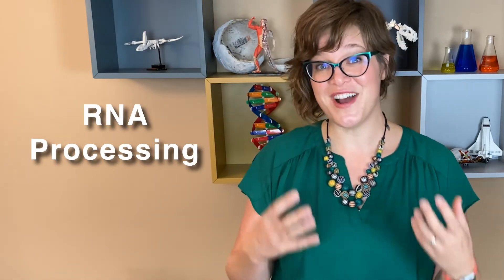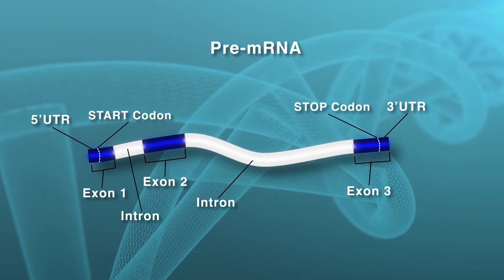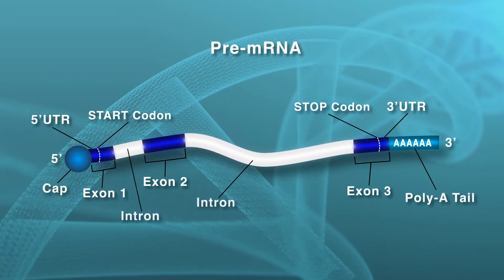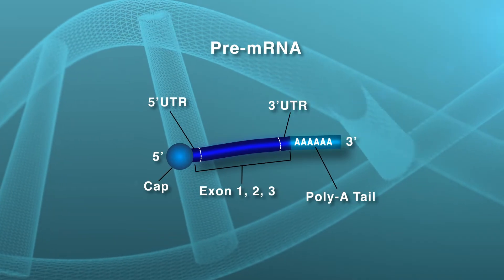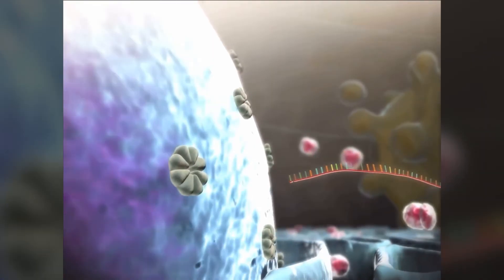If you transcribe something, you probably want to go back later and make some edits, and your mRNA isn't that different. It goes through something called RNA processing. During RNA processing, coding regions of the mRNA called exons are separated from non-coding regions called introns. The exons are stitched together, and stabilizing sequences called the five prime cap and poly-A tail are added to keep the mRNA stable until it can be translated. For a long time, we thought that introns were junk DNA, never to be heard from again, but now we know that sometimes those introns can recombine and remix to make new genes. After all this editing, the final mRNA sequence exits the nucleus and heads to the ribosome for translation.